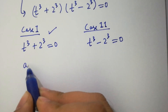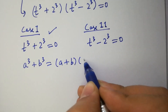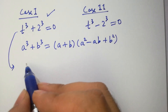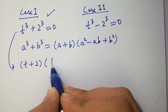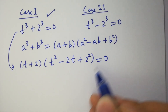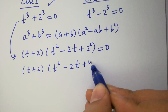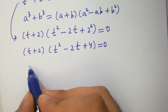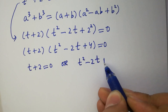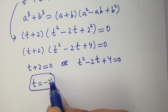Since a cubed plus b cubed equals (a plus b)(a squared minus ab plus b squared), it will be (t plus 2)(t squared minus 2t plus 4) equals 0. So either t plus 2 equals 0, giving t equals minus 2, which is our first real solution, or t squared minus 2t plus 4 equals 0.